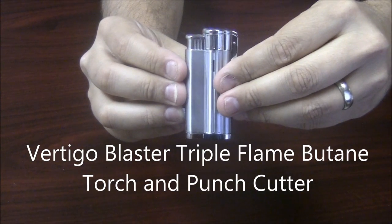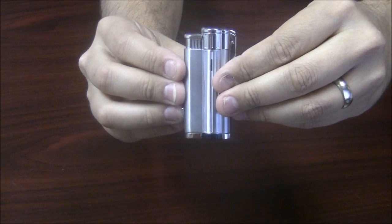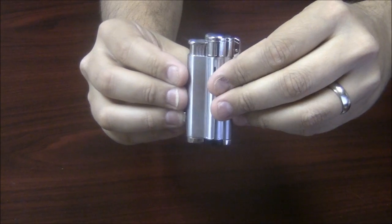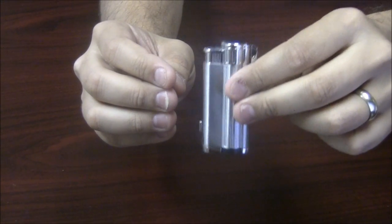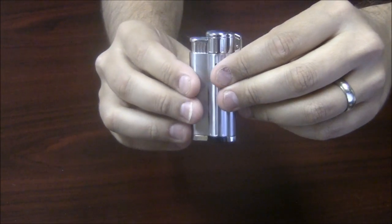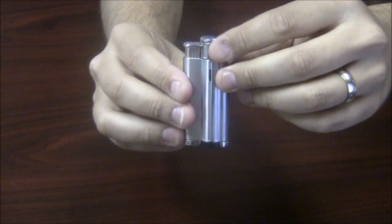The Vertigo Blaster Triple Flame Butane Torch Lighter and Punch Cutter. This metal lighter is solid and sturdy, yet lightweight enough to carry every day.